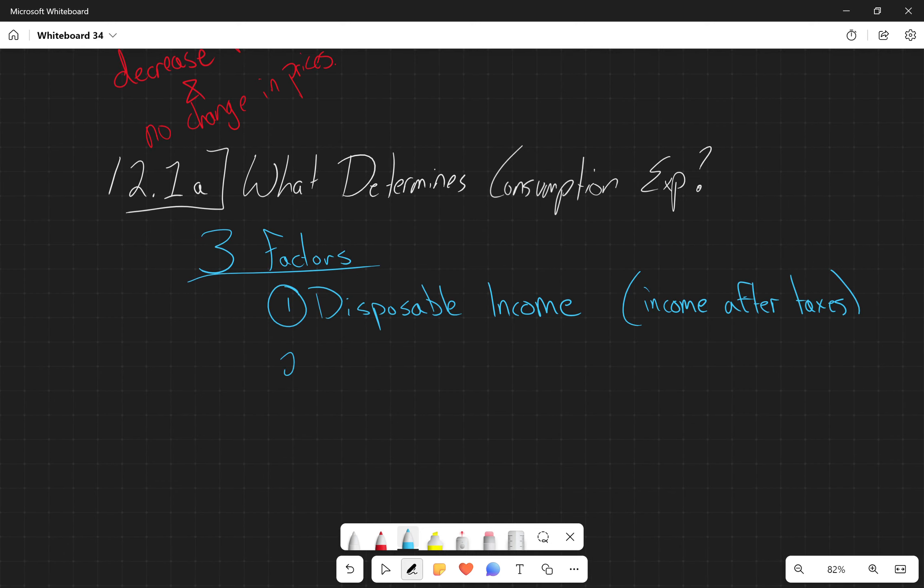The second factor that we have is our expected future income. And then the third factor that we have is our total wealth, maybe our total net debt that we have, as well as the total amount of credit available to us.